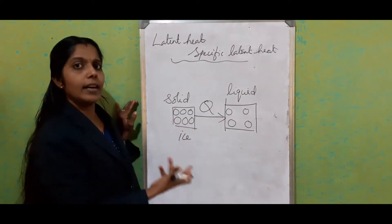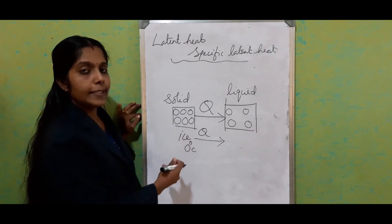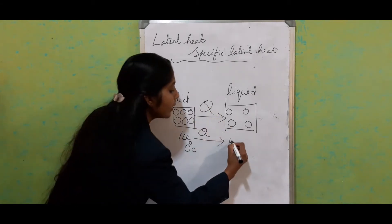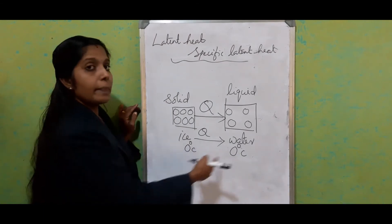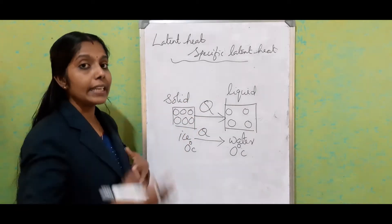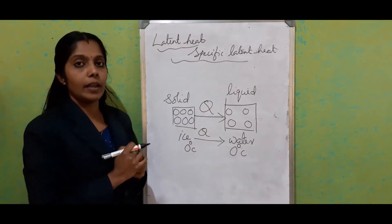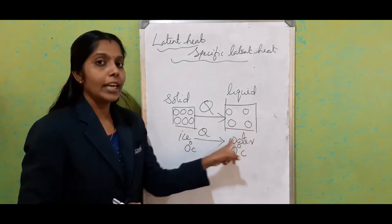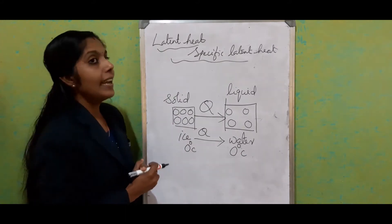Consider ice as an example. What happens when it absorbs heat energy? Ice is at 0°C. If we consider the temperature, it is at 0°C and it absorbs heat energy and changes into water. When it changes into water, what is the temperature? It is also at 0°C. So temperature remains constant, and only the potential energy increases by changing the position of the molecules. That is actually what we call latent heat — the energy absorbed by the substance for its phase change, utilized for increasing the spacing or potential energy. That energy we call latent heat energy.